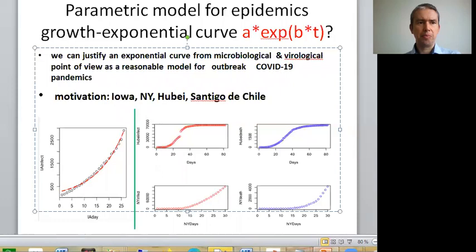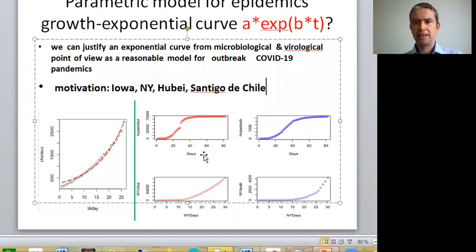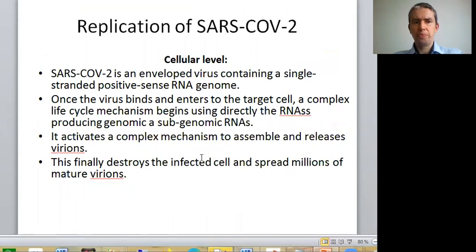As other motivation for exponential curve as a parsimonious model, we can take New York, Hubei, and Santiago de Chile, which are places where very significant pandemic outbreaks have been observed within the last months.